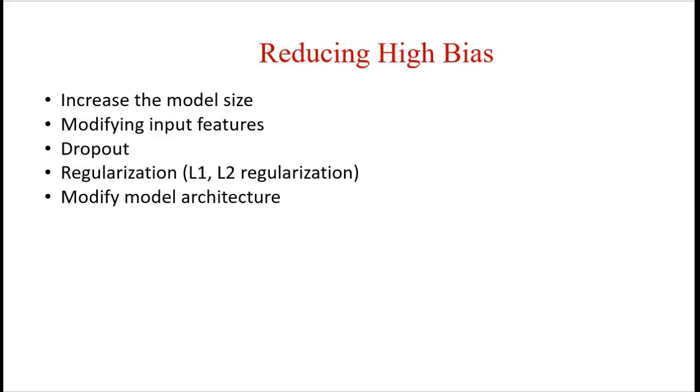In order to avoid high bias, we can use different methods. We can increase the model size. If we have used two hidden layers, then try to include more hidden layers, which will reduce the high bias, reduce the training error, and increase the training accuracy.